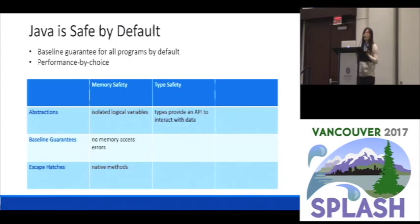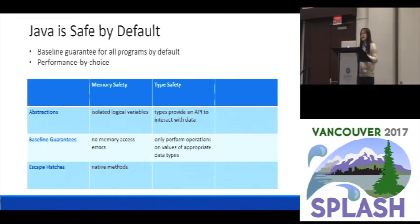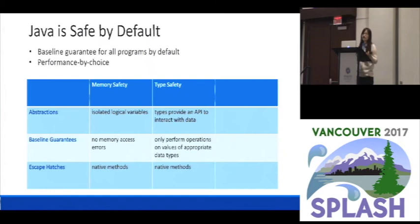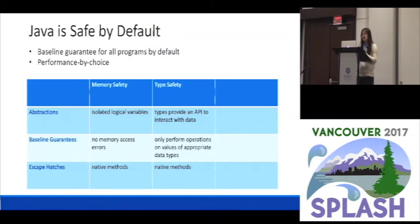The similar idea applies for type safety. Type safety protects the abstraction that types are like APIs — it tells you how to interact with the data. With this kind of abstraction, you have the baseline guarantee that you can only perform operations appropriate to certain types of data for all programs by default. Similarly, if you want performance, you are allowed to write some parts of the code that are not safe using native methods or native code. If you write your method as a native method, you don't get a guarantee from type safety, but you get better performance — and you have to inspect that part of the code to make sure your whole program is safe.